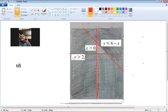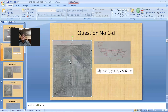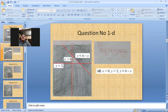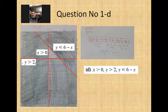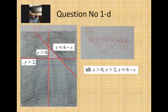I hope you understand this. That was question number one, d part. The white unshaded area is the required area bounded by these three inequalities. Remember: the lines x > 0 and y > 2 should be dotted, and the line y ≤ 6 − x is a continuous line.